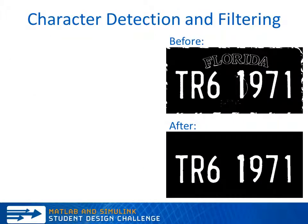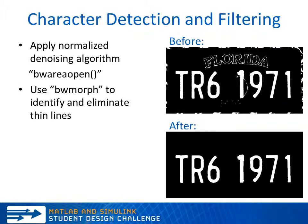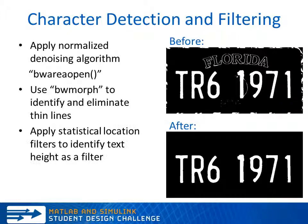The next step in my project is to do character detection and filtering. The first thing we do is apply a normalized denoising algorithm, such as BW area open. We then can use BW morph to identify and eliminate thin lines, such as the one next to the one in the before example.